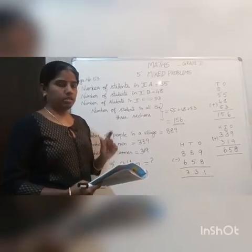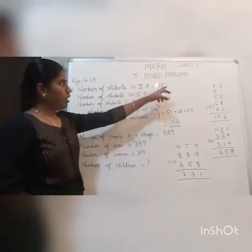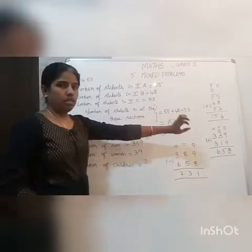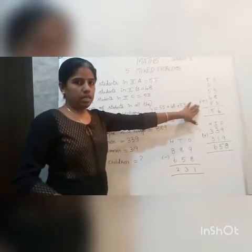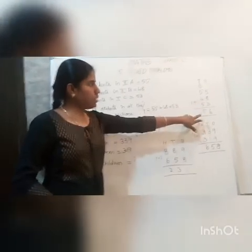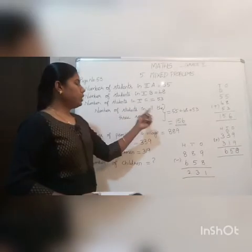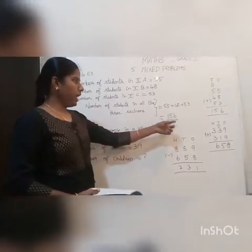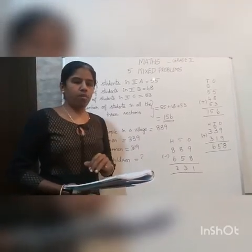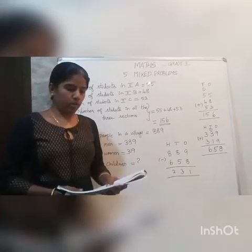Which means you have to add up all three to find the answer. Number of students in all three sections equals 55 plus 48 plus 53. After adding all three numbers we get 156. So the number of students in all three sections is 156. In these word problems we have both addition and subtraction together in a few sums.